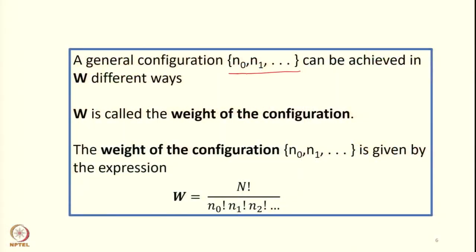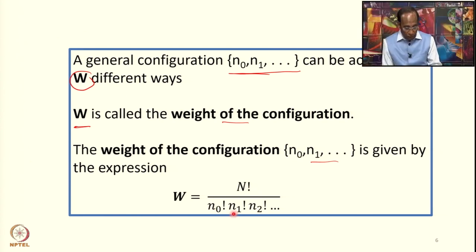A general instantaneous configuration (N0, N1, ...) can be achieved in W different ways. We call W the weight of the configuration. This weight can be written as N factorial divided by N0 factorial times N1 factorial times N2 factorial, and so on. N is the sum of all the small n's, and N0, N1, N2 come from the instantaneous configuration.